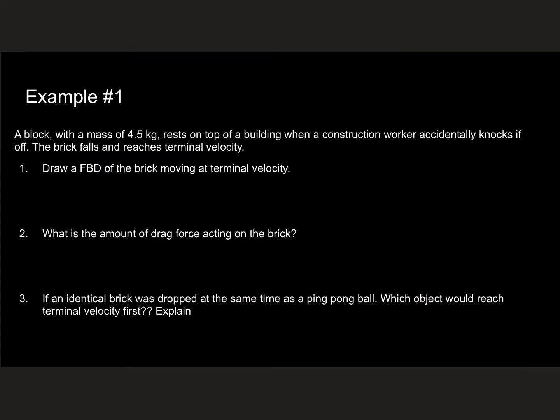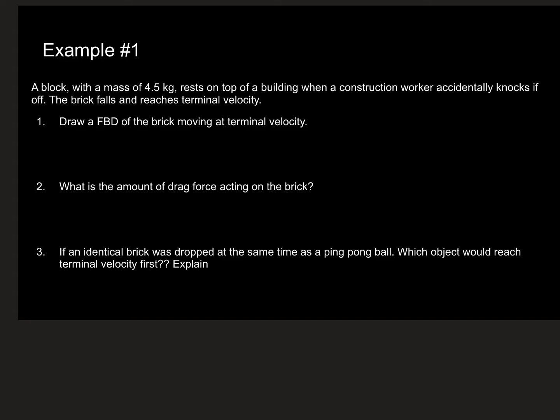Let's do an example. So a brick with a mass of four and a half kilograms rests on top of a building when a construction worker accidentally knocks it off. The brick falls and reaches terminal velocity. Draw a free body diagram of the brick moving at terminal velocity. So it's pretty simple. So we know the force of drag would just have to be equal to the mass times gravity of our brick at terminal velocity because the summation of all our forces is zero because the object is in what's called dynamic equilibrium.